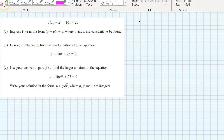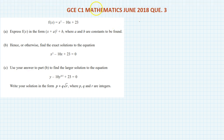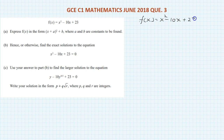Question number 3. f(x) is x squared minus 10x plus 23. Express f(x) in the form (x + a) squared plus b. We know this form is obtained by the method of completing the square.